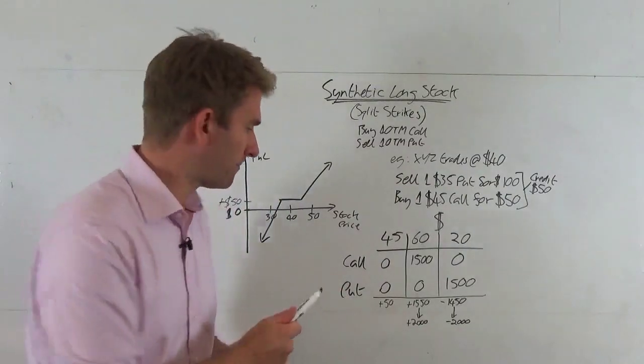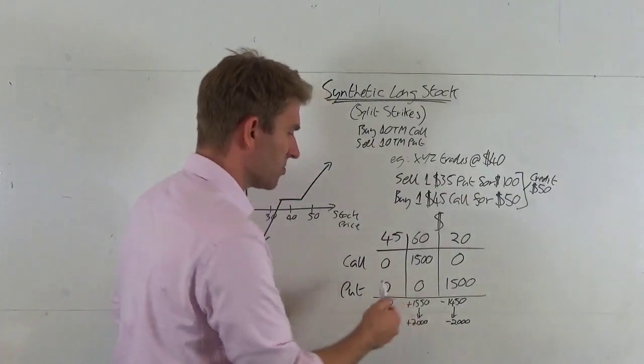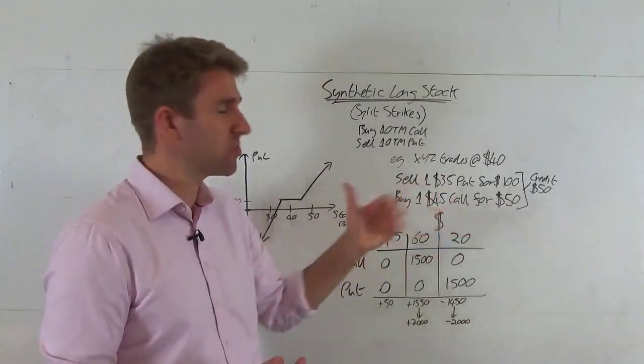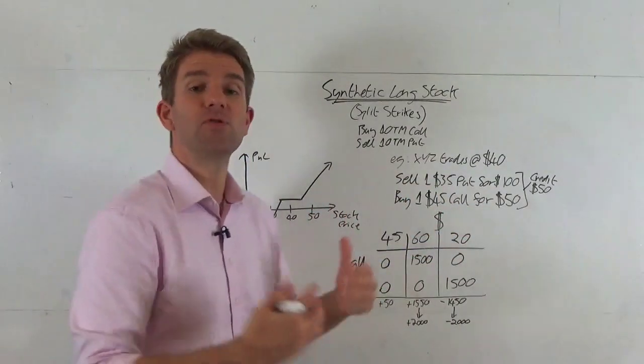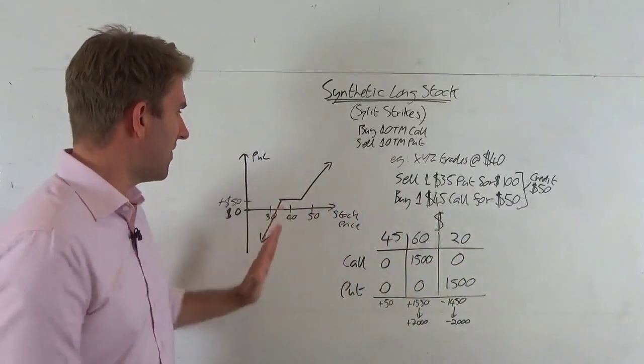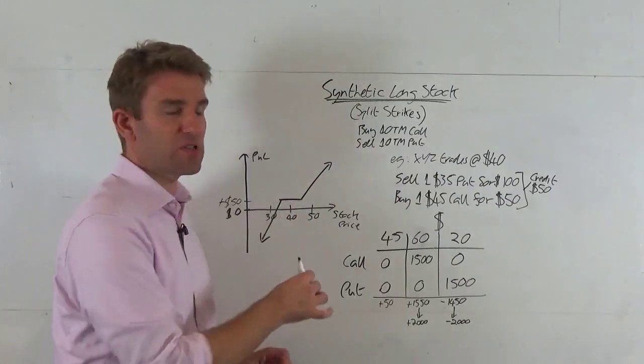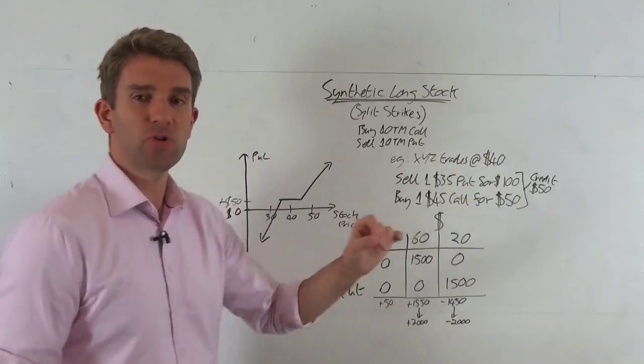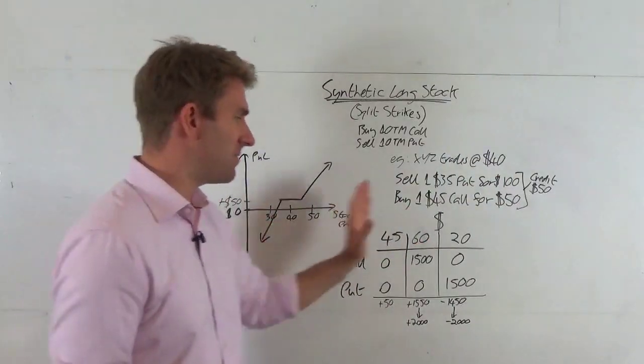But what would happen if we were long the stock? This number here is what would happen if we were long the stock. If we're on the stock at 40, 100 shares of stock which is the same as one contract, 20 move is 2000. So you can see we've given a bit of profit for this ability to still make something when the stock price does nothing. We've not made as much as we would if we were long stock.